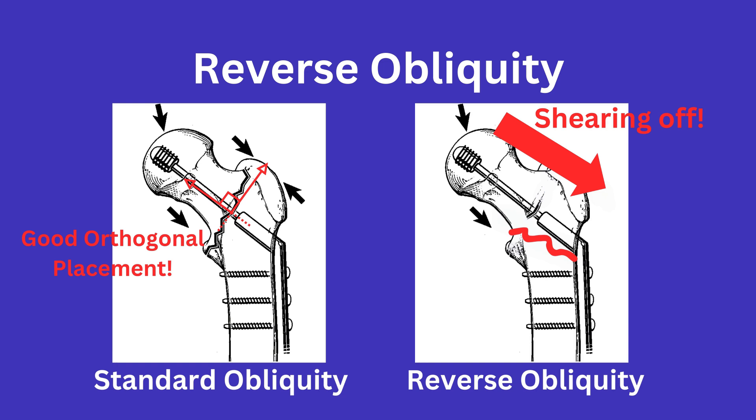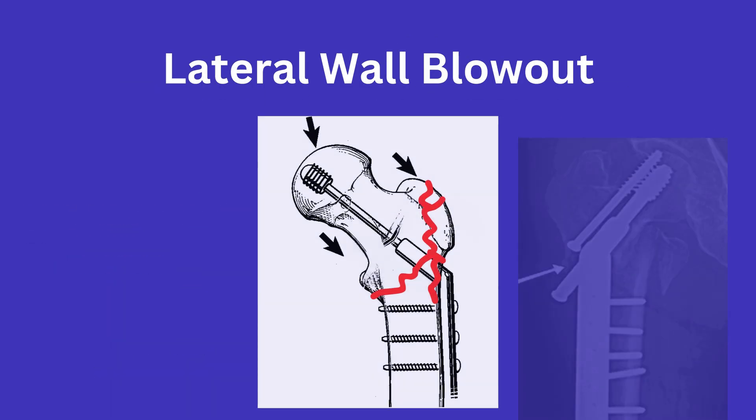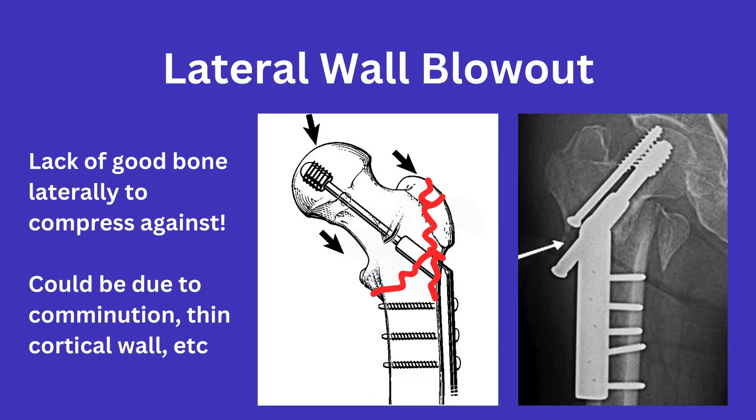For lateral wall blowout, you can imagine if there is severe comminution right where your DHS is trying to capture good bone. In order to compress the fracture line, you essentially would have nothing of good quality to push against and thus compress the fracture.